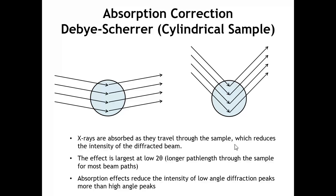The last term in our intensity equation is the absorption correction. We have to account for the fact that X-rays tend to be strongly absorbed by matter. As an X-ray travels through a sample in transmission mode — for example, putting the sample in a capillary for a Debye-Scherrer experiment where X-rays go through the capillary before reaching the detector — the path length of the X-rays through the matter leads to attenuation of the beam, affecting peak intensities.